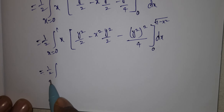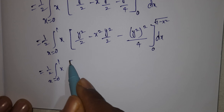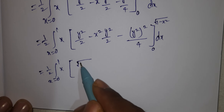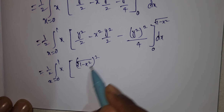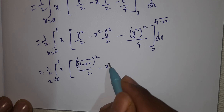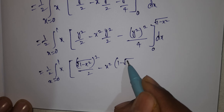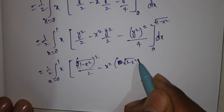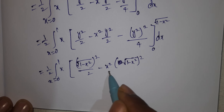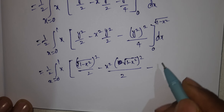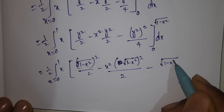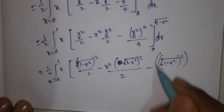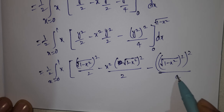That equals 1/2 times integral x = 0 to 1, x times [applying the upper limit y = √(1-x²)]: (1-x²)/2 minus x²·(1-x²)/2 minus (1-x²)²/4. The lower limit y = 0 gives zero throughout.